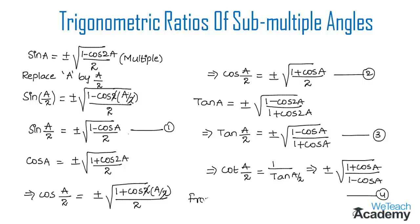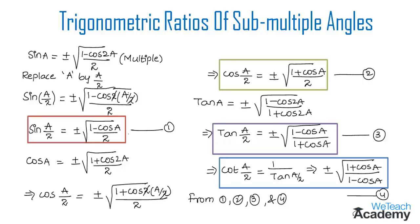From equations 1, 2, 3, and 4, we have the formulas for the trigonometric ratios of sub-multiple angle a/2. This was the basic introduction on how to derive these formulas depending upon the formulas of multiple angles. Hope you understood the concept. Do like and subscribe to WeTeach Academy. Thanks for watching. Have a nice day.